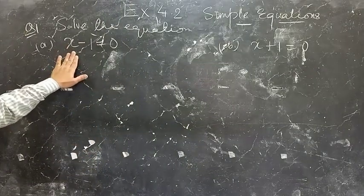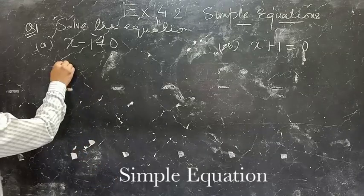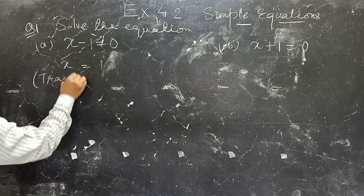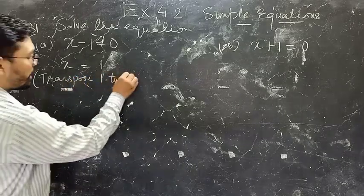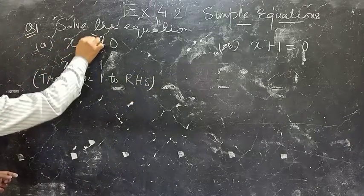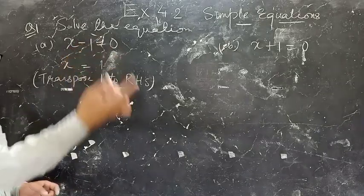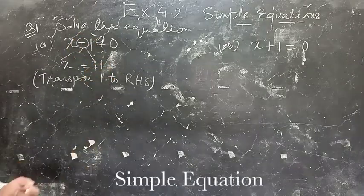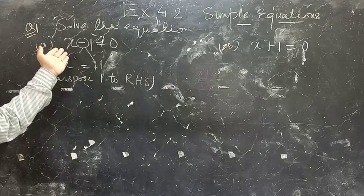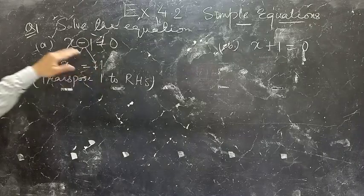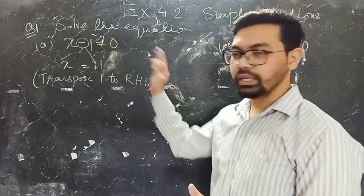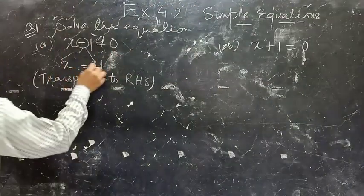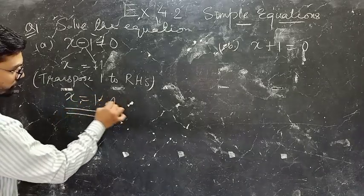For x minus 1 equals 0, the first step is to transpose 1 to the RHS. So x is equal to 1. The sign gets changed when you move a term from LHS to RHS. So this is your answer, and this is the step.